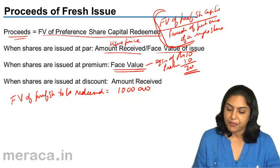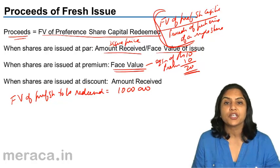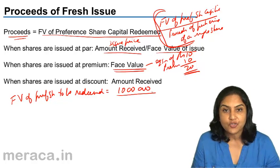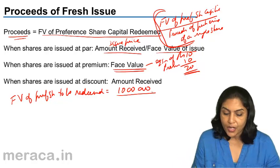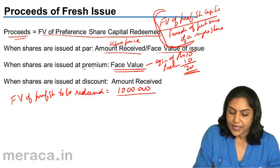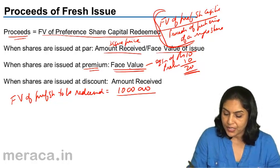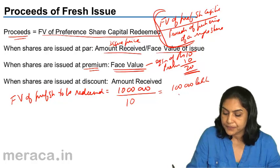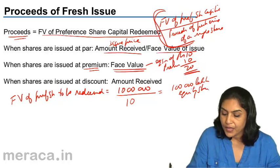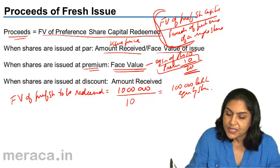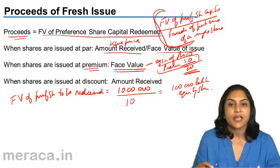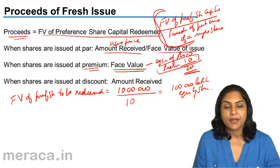Now, face value of preference shares to be redeemed is 10 lakhs. To find out the number of shares, do I divide by 20 or do I divide by 10? When shares are issued at a premium, we take the face value — that means we divide by 10. 10 lakh divided by 10, we come to 1 lakh equity shares.